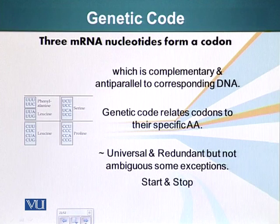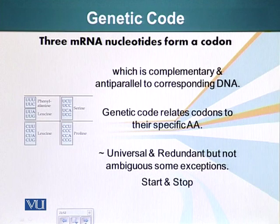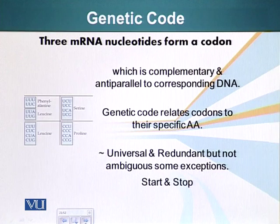An important feature of genetic code is that it is universal and redundant but not ambiguous. Universal means that pretty much all organisms use the same genetic code — there are a few minor exceptions, but the genetic code is essentially universal. So if we take a messenger RNA from a human and put it in a bacteria, the bacteria will make the same protein a human cell would.